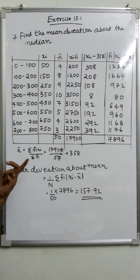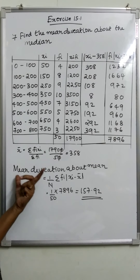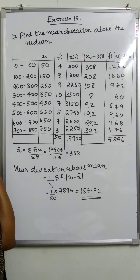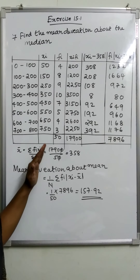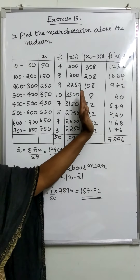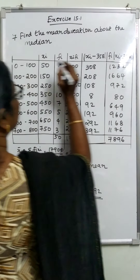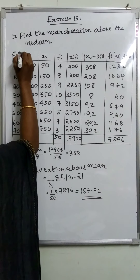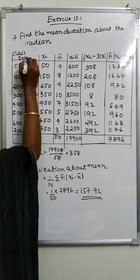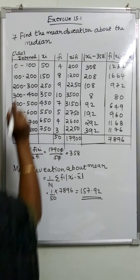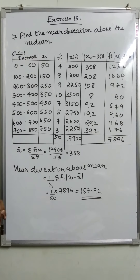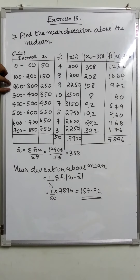First we have to find the mean, that is sigma fi xi by sigma fi. The class interval is 0 to 100, 100 to 200, 200 to 300. Income per day, number and age — that is the class interval.